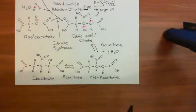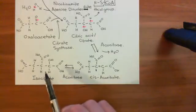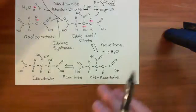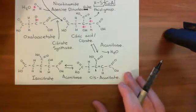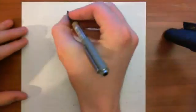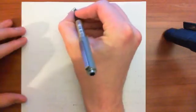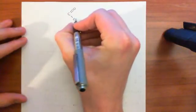Welcome to this next video in which we are discussing the citric acid cycle. We've currently got to isocitrate, and we want to see what's going to happen to isocitrate next. What's going to happen is that it's going to be acted upon by an enzyme known as isocitrate dehydrogenase. Let's copy out the structure of isocitrate again. Isocitrate is this six-carbon molecule,